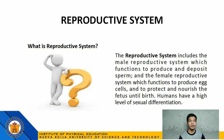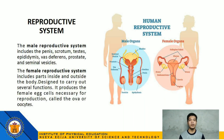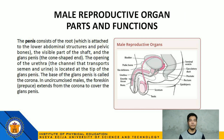Last from the list, we have the reproductive system. It includes the male reproductive system, which functions to produce and deposit sperm, and the female reproductive system, which functions to produce egg cells and to protect and nourish the fetus until birth. Humans have a high level of sexual differentiation. Under the male reproductive organ parts: the penis consists of the root, which is attached to the lower abdominal structures and pelvic bones, the visible shaft, and the glans penis — the cone-shaped end. In uncircumcised males, the foreskin or prepuce extends from the corona to cover the glans penis.